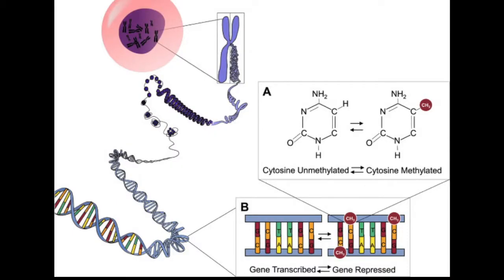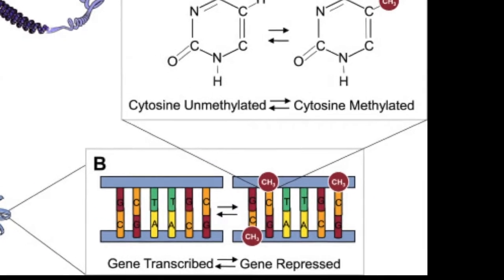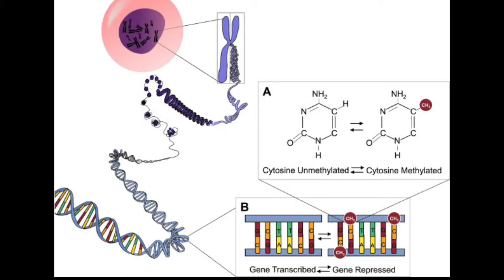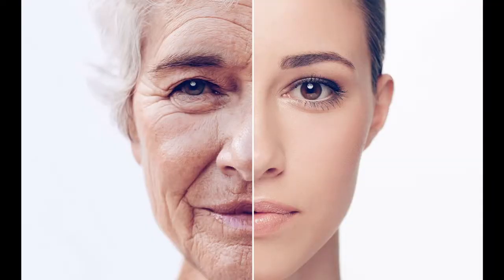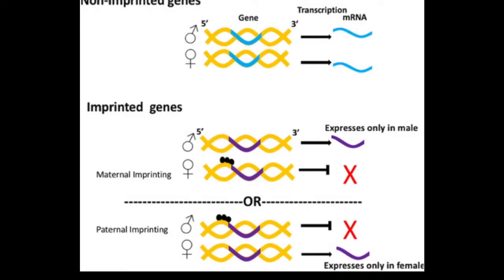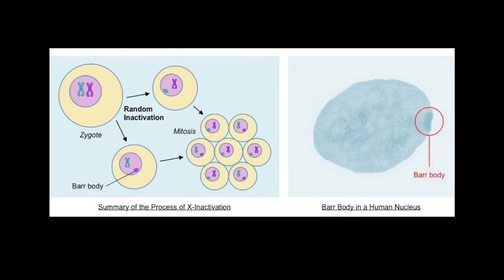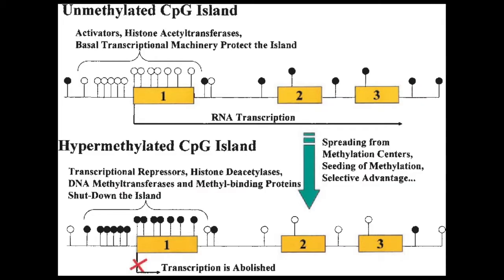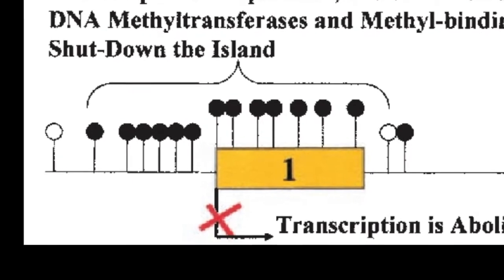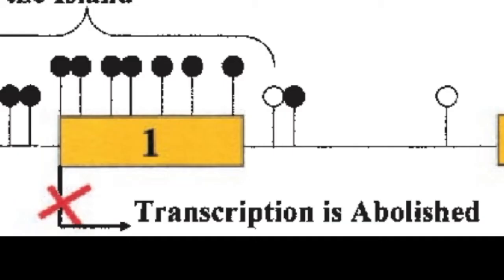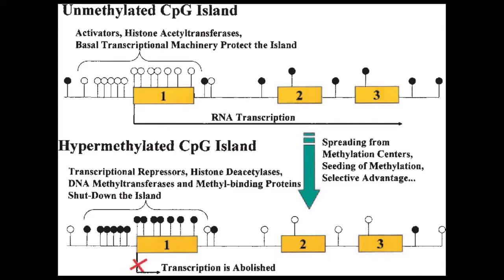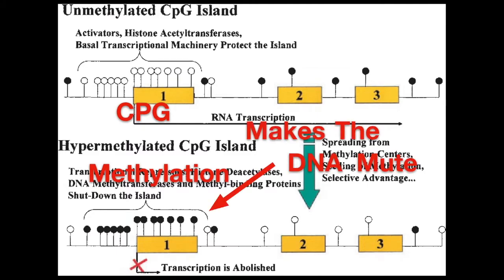DNA methylation is the addition of methyl groups on the DNA. This makes DNA more condensed and thus less active. DNA methylation is involved with aging, carcinogenesis, genomic imprinting, transposable element repression, and X inactivation. Methylation in the gene promoter CpG islands normally represses gene transcription. Remember that CpG methylation makes the DNA mute.